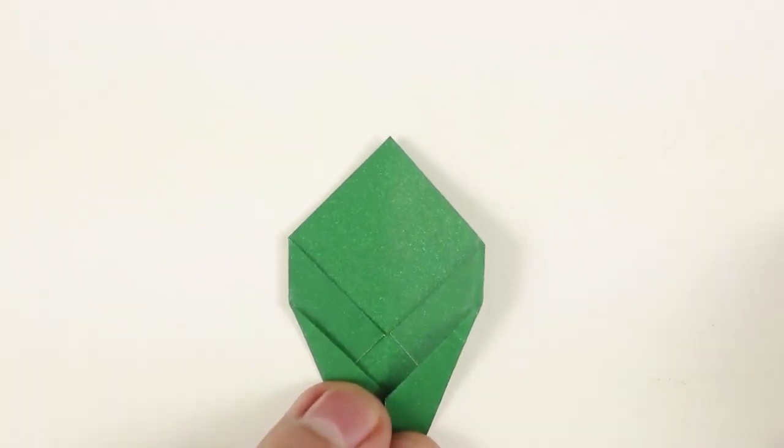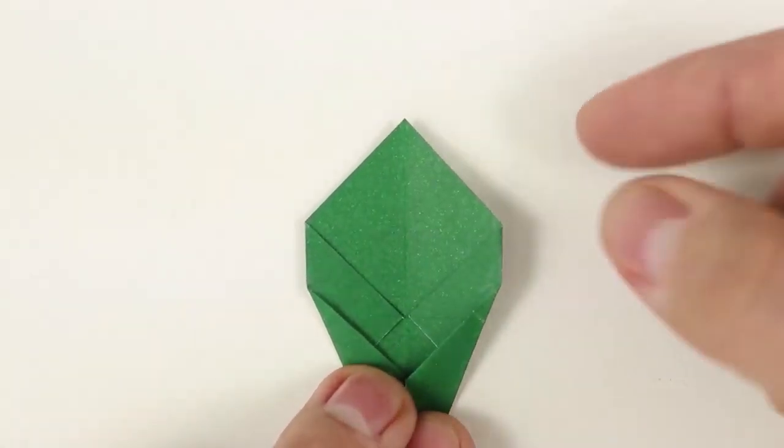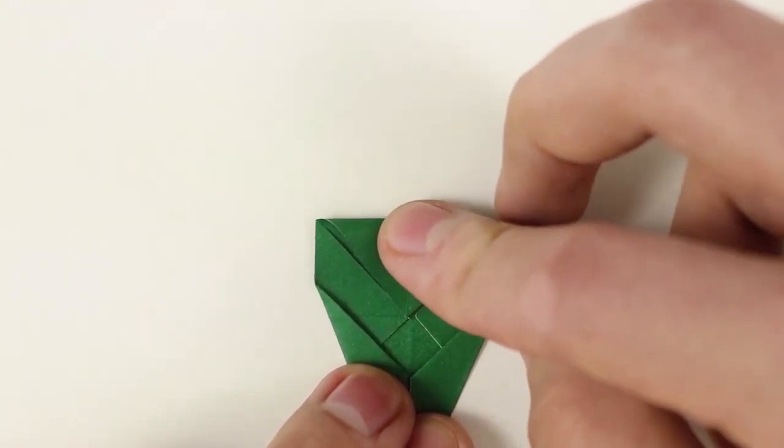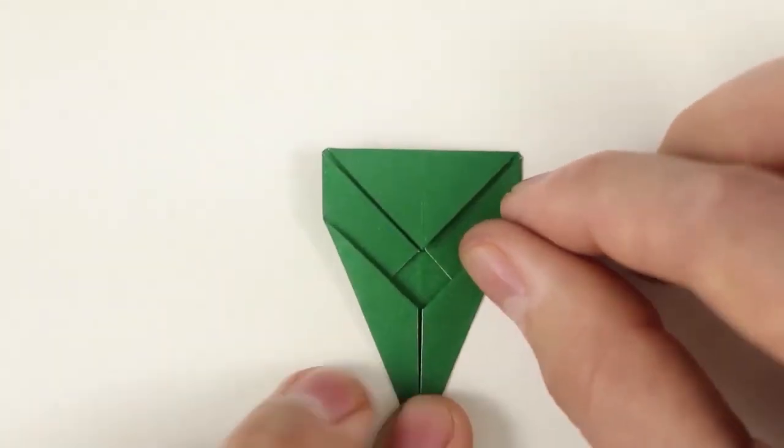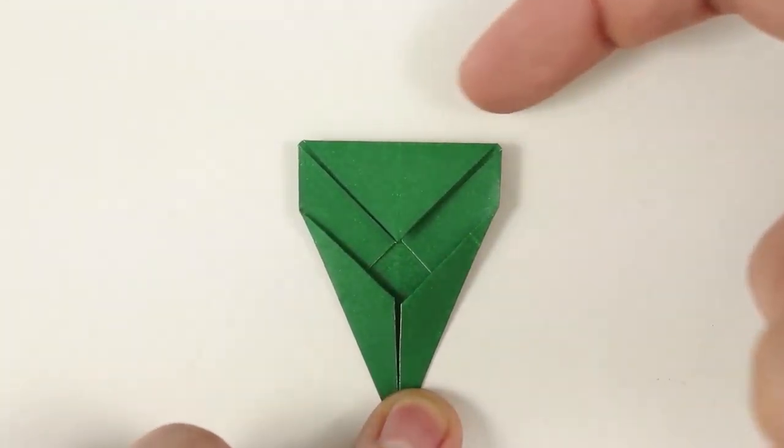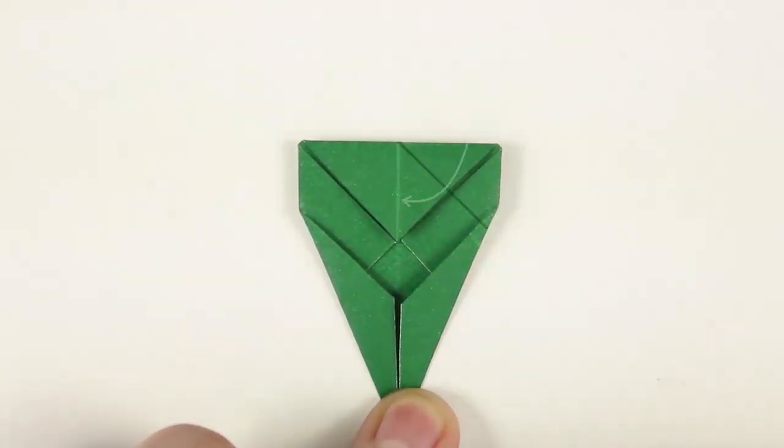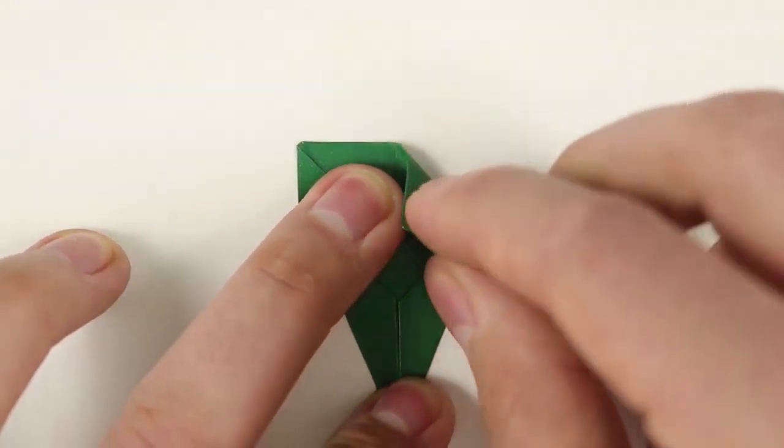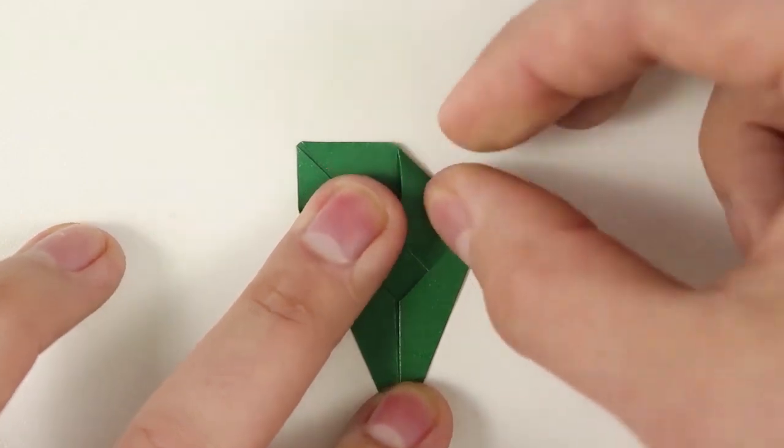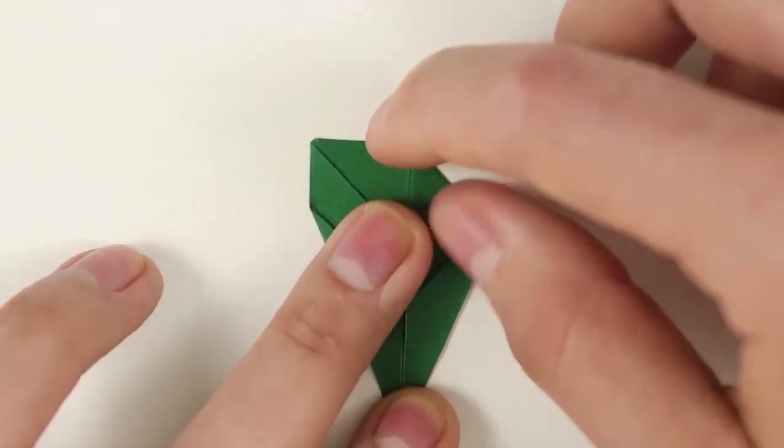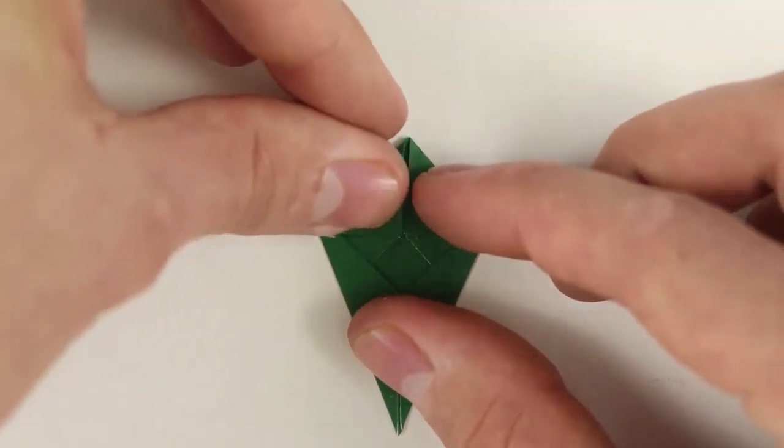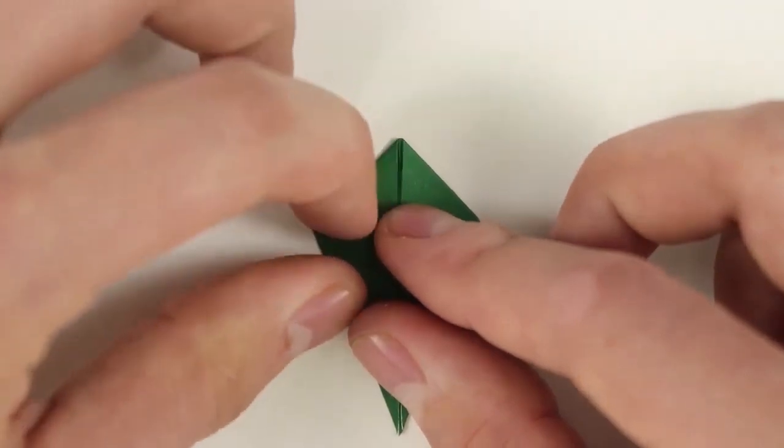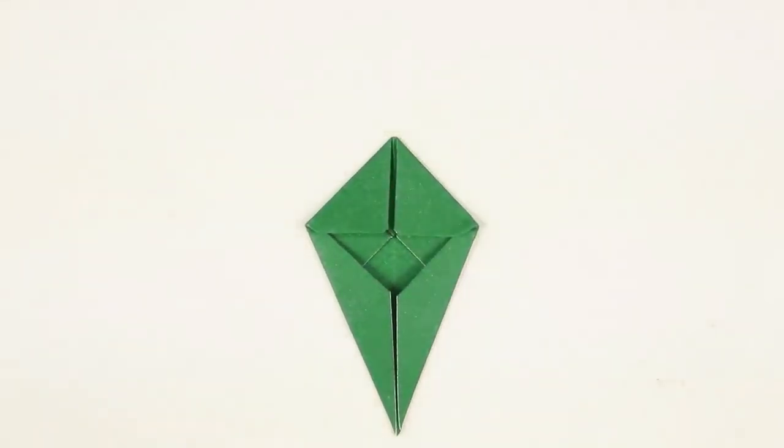Now rotate again, fold the top corner down, and fold half of the top edge to the middle. Right side, and left side. Now we are done with this part.